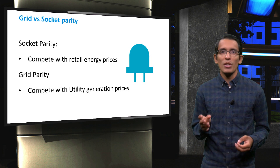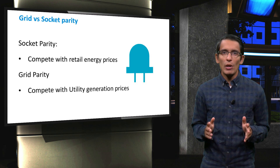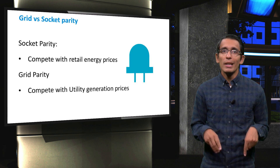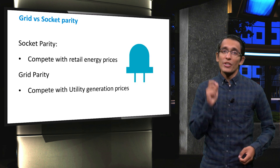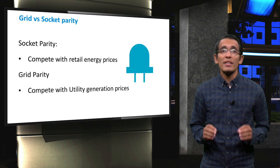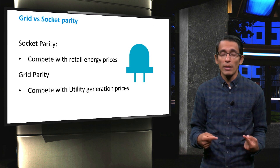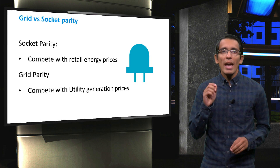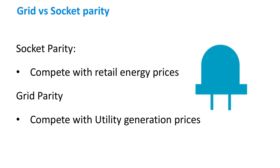Furthermore, taxes will also increase the price of electricity for a consumer. Therefore, socket parity is reached before grid parity since the retail price of electricity is higher than what a producer pays. When socket parity is reached, it is economically desirable for an individual to invest in a solar home system since the cost of energy the system produces is cheaper than what they would pay on the market. However, an investor looking to build a coal-fired power plant or a giant solar farm will prefer PV only once grid parity is reached.